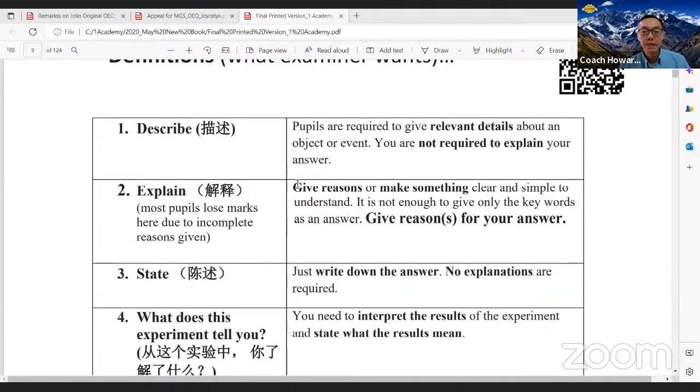These are the science process skills. And this is the open-ended. These are the must-know. You can see there's a difference here. Explain. Give reason or make something clear and simple to understand. It is not enough to give only the keywords. So the student must explain. Explain and describe is slightly different. Describe, I just tell them, it's just like write a composition, narrative composition. You write down what you see. Like a reporter, just write down what you see.